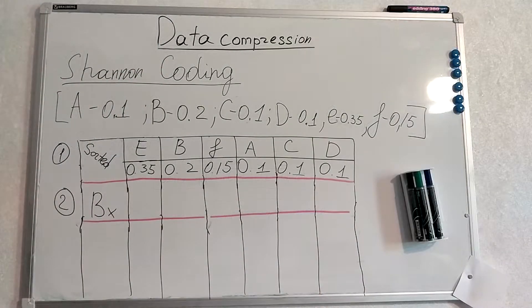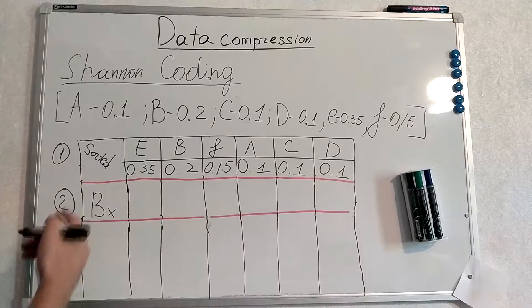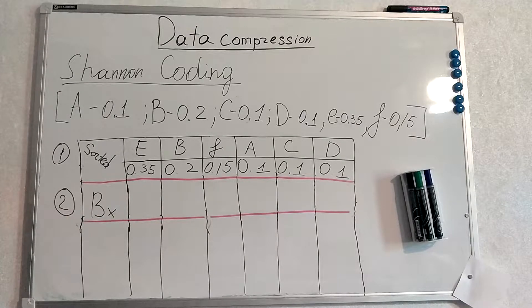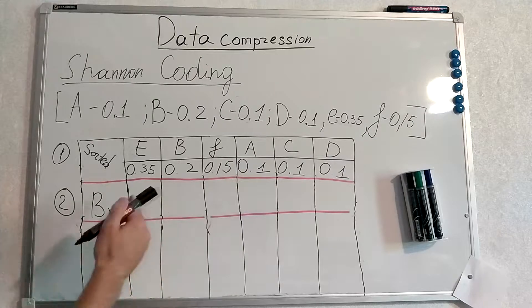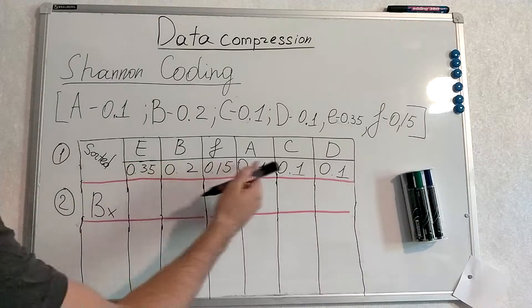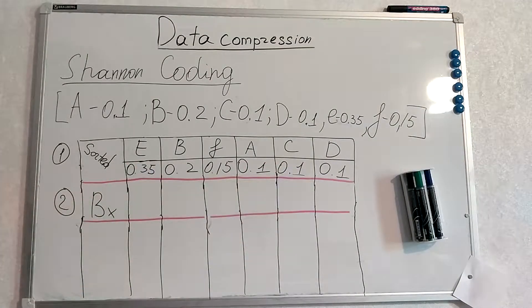Now it's kind of a tricky part. We have to find the thing which is called Bx. Actually it is nothing but sum of the probabilities up to some symbol if we take our sorted sequence. I think an example will explain it better.